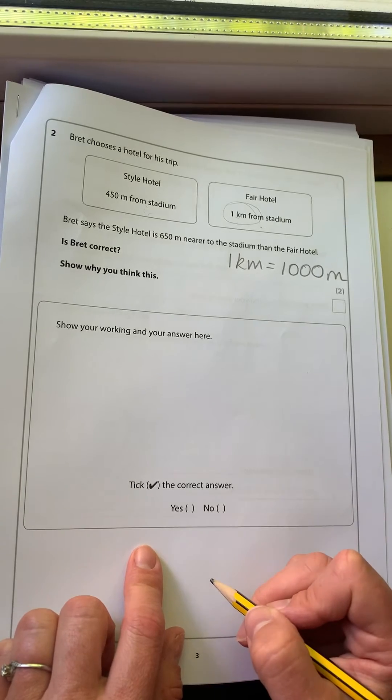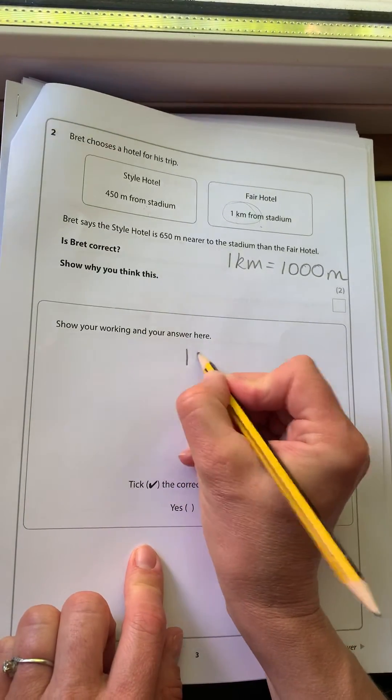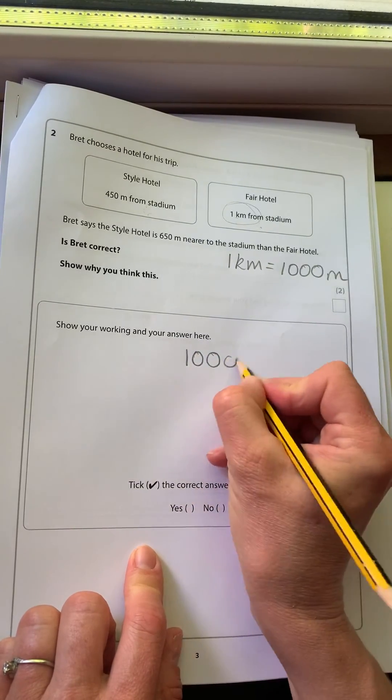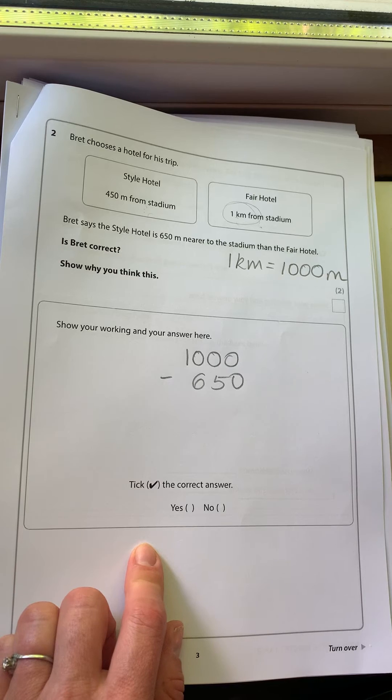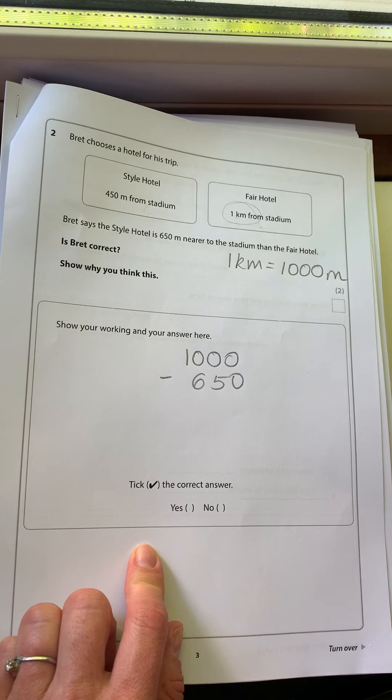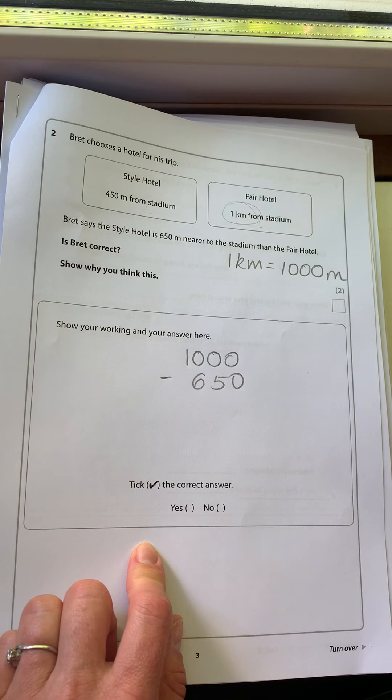So now we can check what the difference is. The difference between 1000 and 650. You might count on, starting at 650. It's 50 up to 700, and then 700 to 1000 is 300. So that's 350.